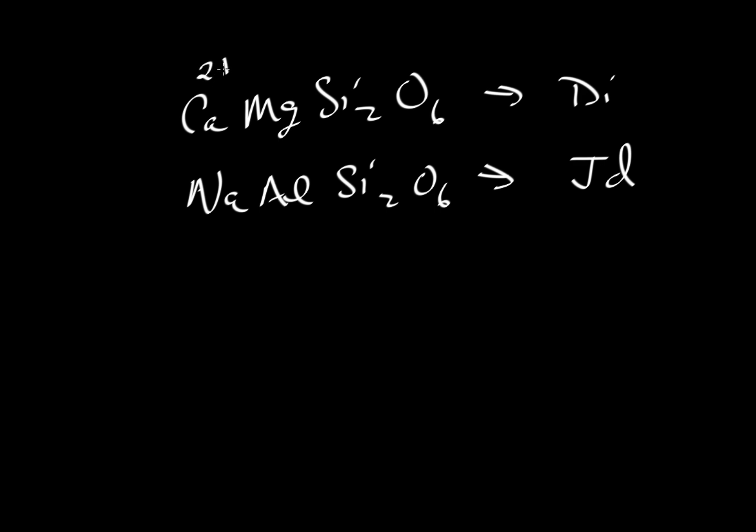Here we have calcium as a 2+ cation and sodium as a 1+. So we have a charge mismatch. If we put sodium on the same site as calcium we lose a charge. How do we gain it? We gain it back by putting an aluminum 3+ in place of the magnesium 2+.